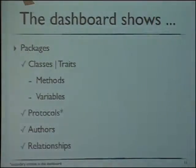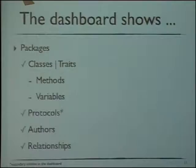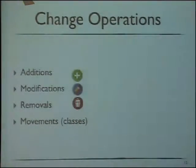The dashboard shows entities from the snapshot — packages, classes, traits, methods, variables, extensions, protocols, authors, and relationships. I initially included a lot of protocols but got feedback to keep less detail since it also uses space in the visualizations. Internally I'm processing all the information. Using Monticello for the data, I map additions, modifications, and removals of packages, classes, and all entities. I've also started working on detecting renamings or moves of classes, and I should continue with refactorings.